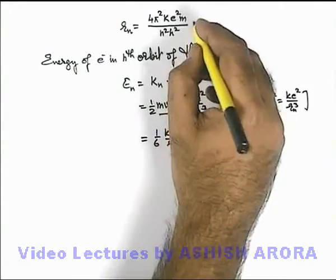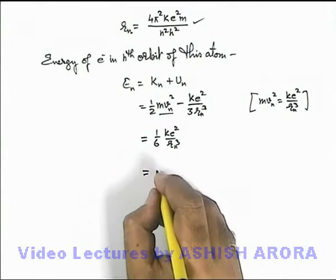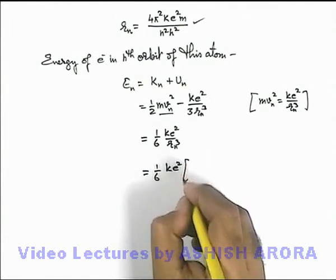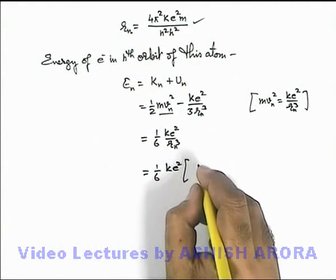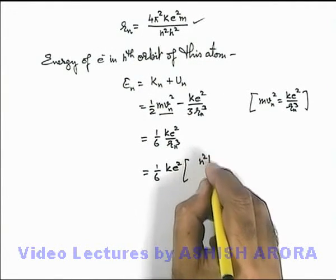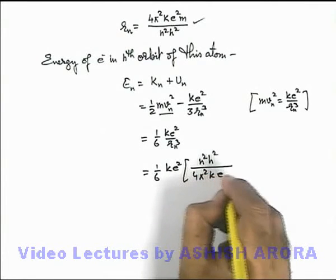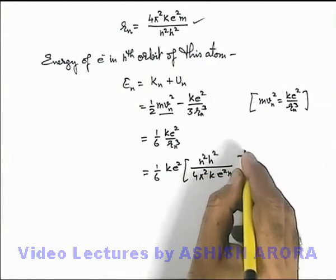Now if I substitute the value of r n here, I'll be getting 1 by 6 k e square times n square h square over 4 pi square k e square m whole cube.